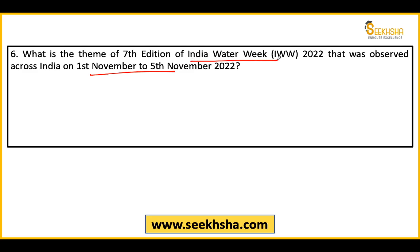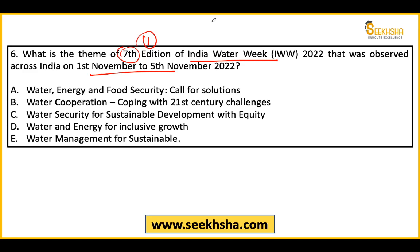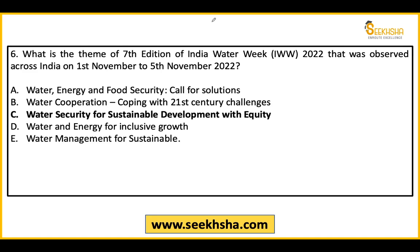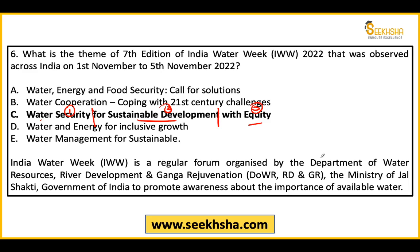Sixth question: India Water Week recently celebrated its 7th edition in November. What was the theme? There are 5 options for the theme. The answer is 'Water Security for Sustainable Development with Equity.' Themes generally follow key elements, and this theme covers water security, sustainable development, and equity. It is regularly organized by the Department of Water Resources.